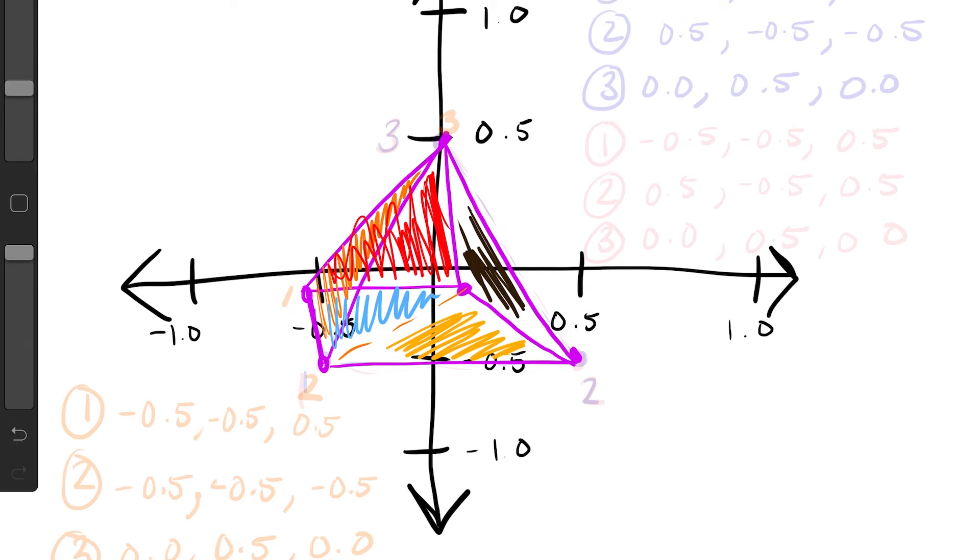So if we count it, we have one, two, three, four, five, six, which is the front facing one. Six triangles. Okay, we have six triangles we need to draw.